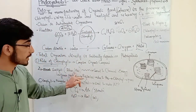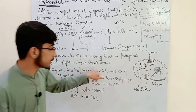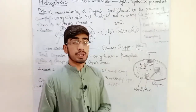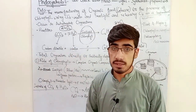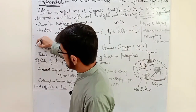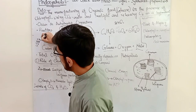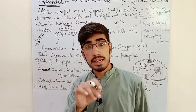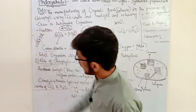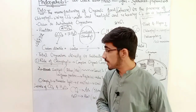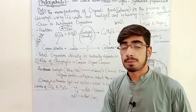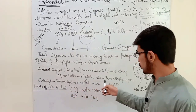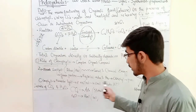Chlorophyll effectively absorbs red and blue light and converts it to chemical energy. The green portion of sunlight is reflected. Because green light is reflected and not absorbed, chlorophyll appears green in color.